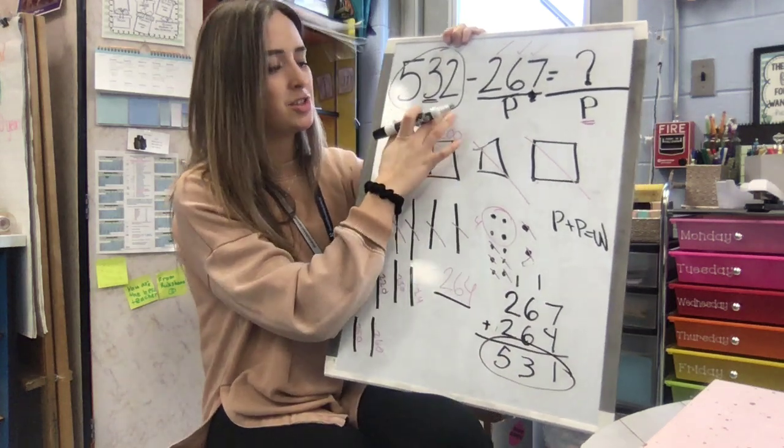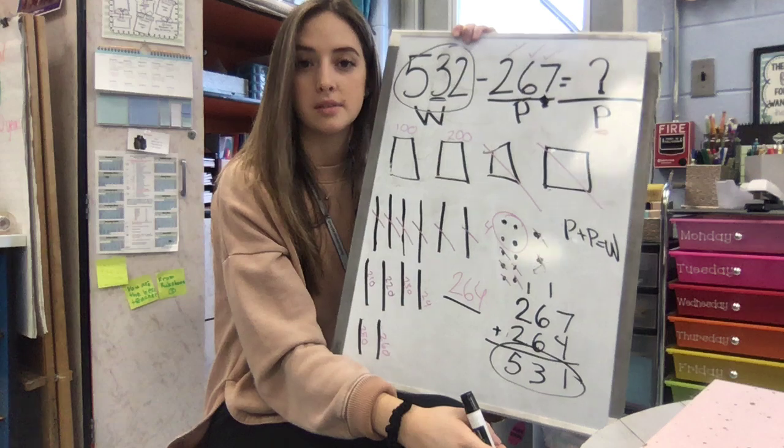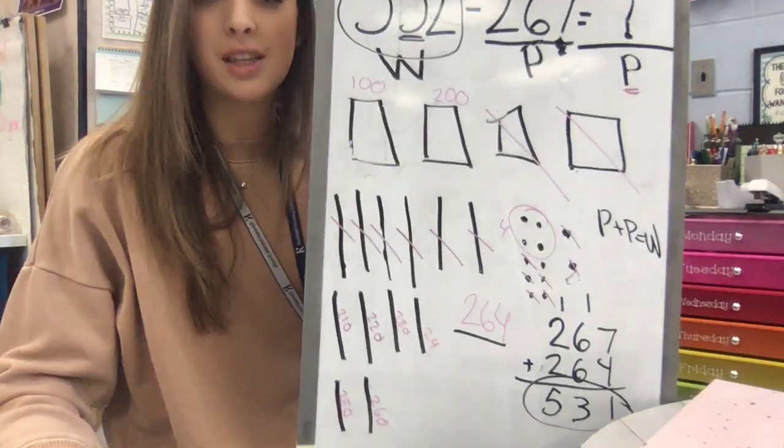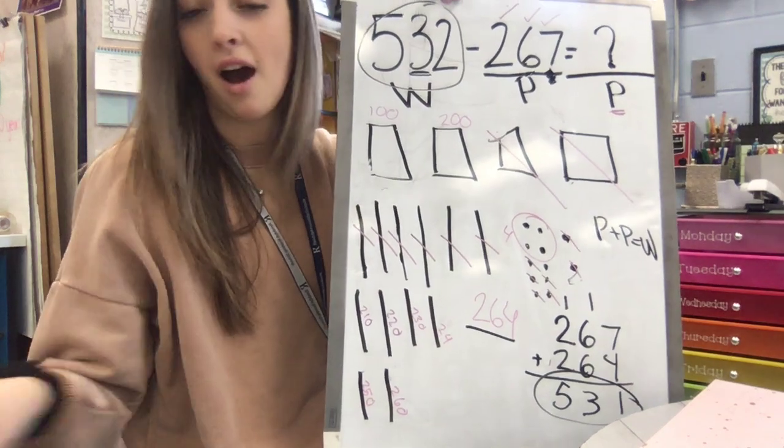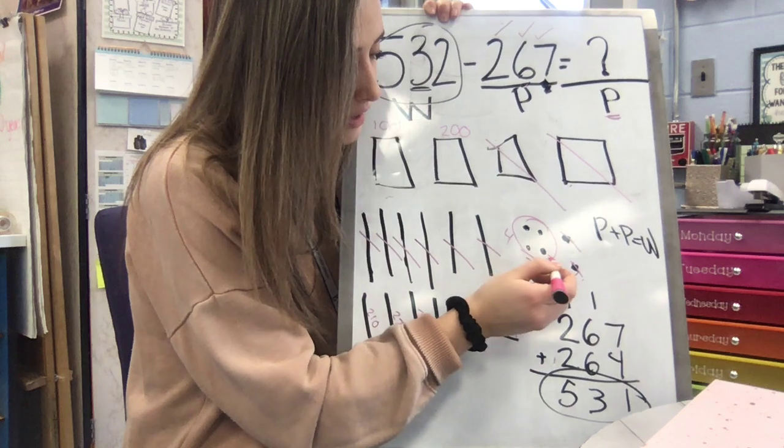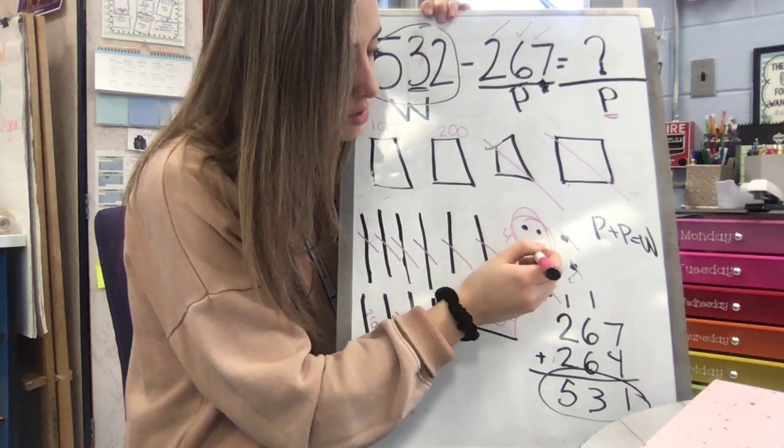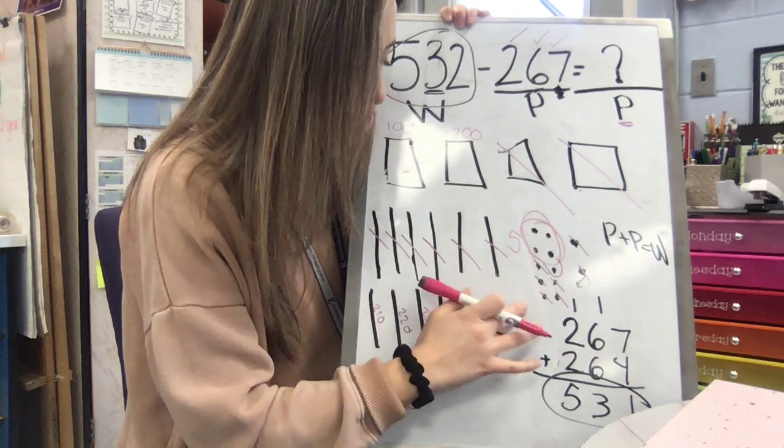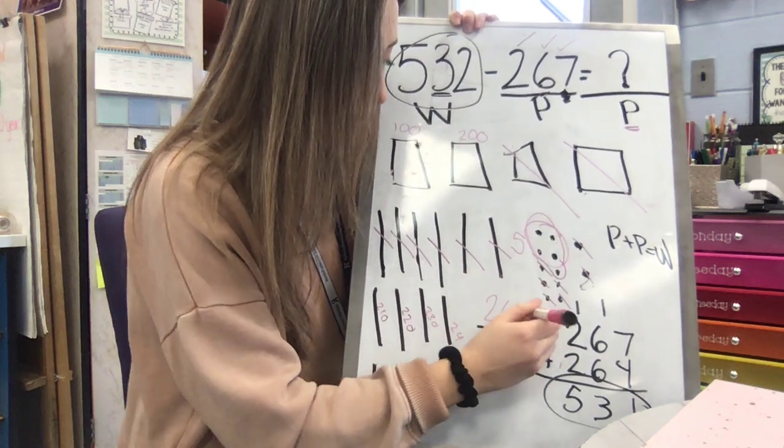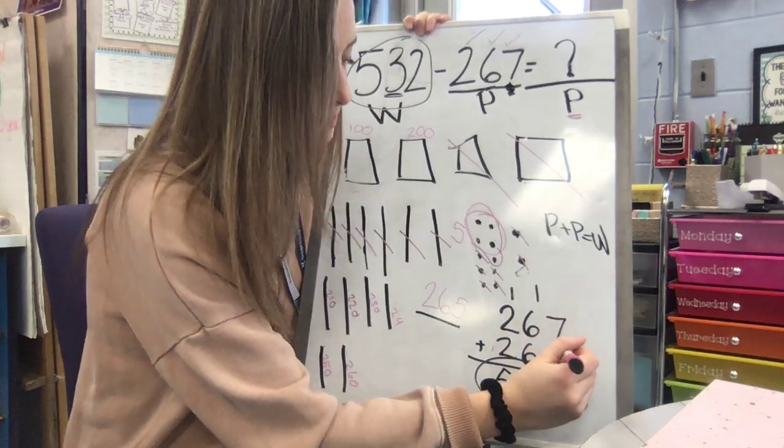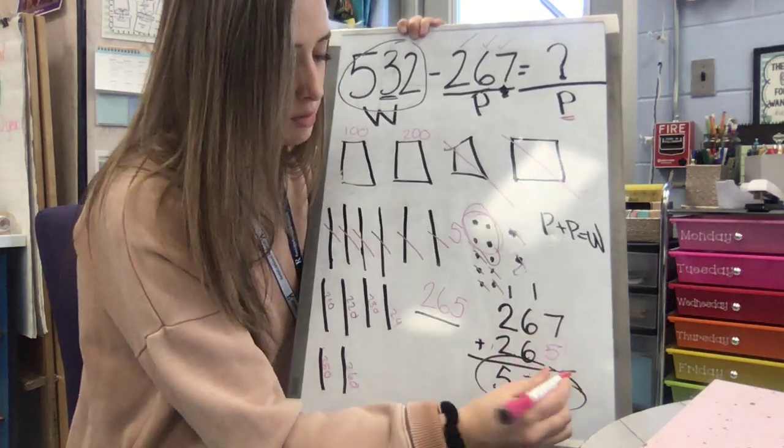Is that 532? It's not. So let's look back and see what happened. If you look closely, even I made a mistake. I forgot to add this little one into my group. Right? Oops. 1, 2, 3, 4, 5. It's not 4. It's a 5. So this is 265. And if this was 265, this would be 532.